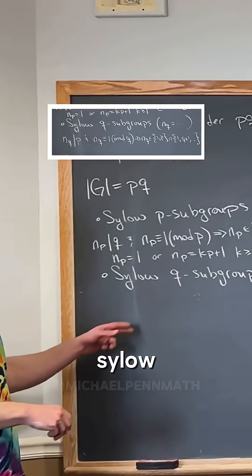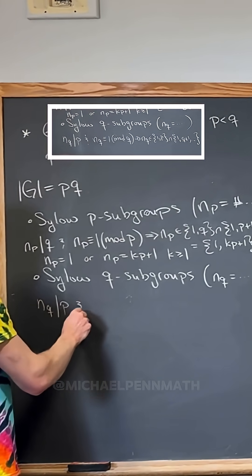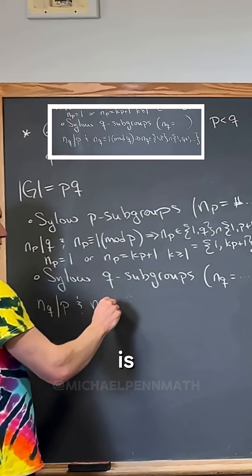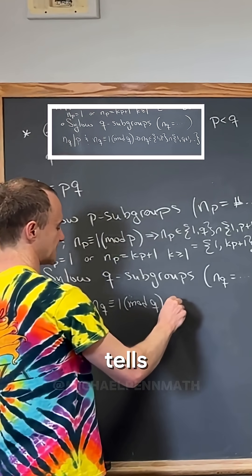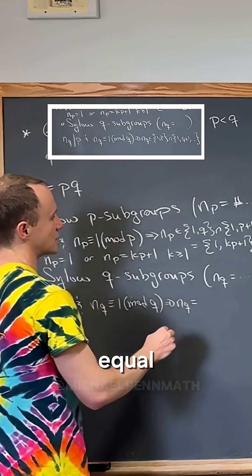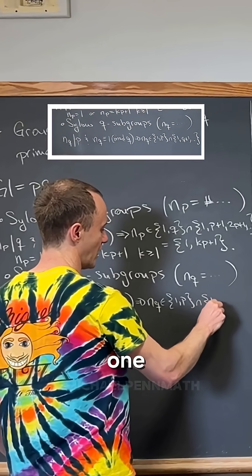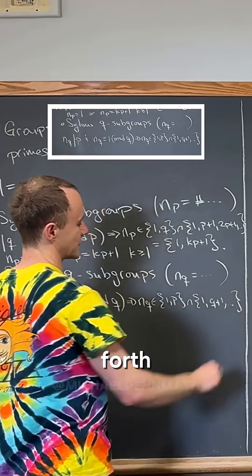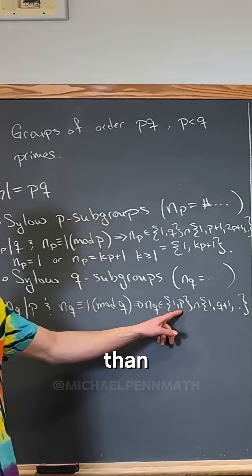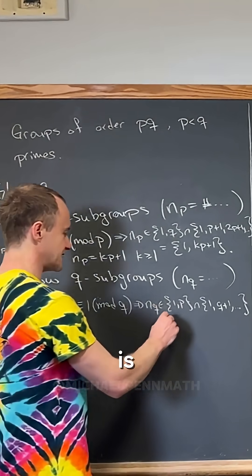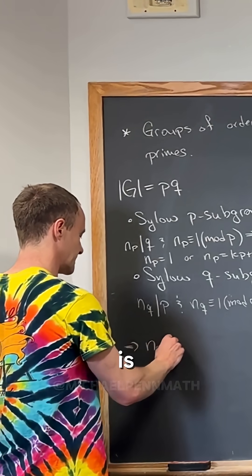Now let's look at Sylow q-subgroups. We know n_q must divide p, and n_q is congruent to 1 mod q. That tells us n_q is an element of {1, p} intersected with {1, q+1, ...}. But since q is bigger than p, q+1 is bigger than p, so this intersection is exactly {1}. Therefore n_q = 1.